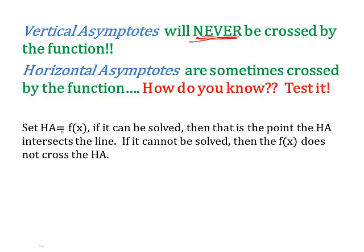You set the horizontal asymptote that you found using Bobby O'Bottin O'HTC and set that equal to the function. If you can solve it, then that's the point where the horizontal asymptote intersects the curve. If it cannot be solved, then the function does not cross the horizontal asymptote. Let that soak in, write it down, and let's do some examples.